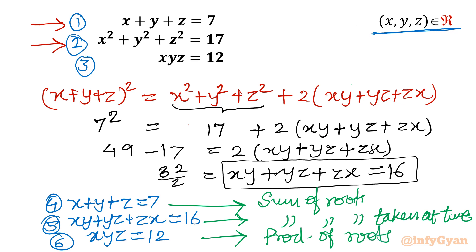Now I will frame one cubic equation whose roots are xyz and sum of roots, sum of roots taken 2 at a time, and product of roots are 7, 16 and 12 respectively. Let us frame it first and then we have to solve it.